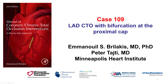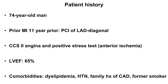Hi, this is Manos Brilakis from the Minneapolis Heart Institute presenting case 109 for the Manual of CTO Interventions. This is a case of an LAD CTO with a bifurcation of the proximal cap. The patient was a 74-year-old man with previous stenting of the LAD diagonal 11 years prior, who presented with progressive angina and anterior ischemia with a preserved ejection fraction.